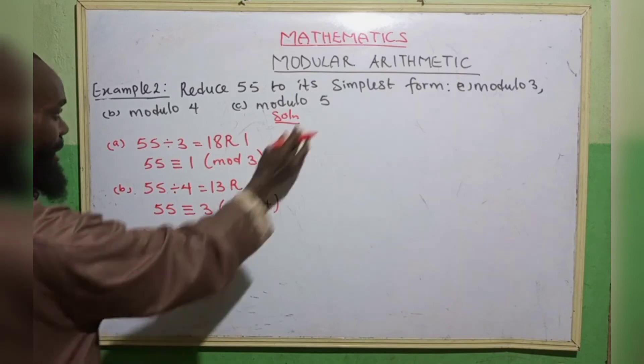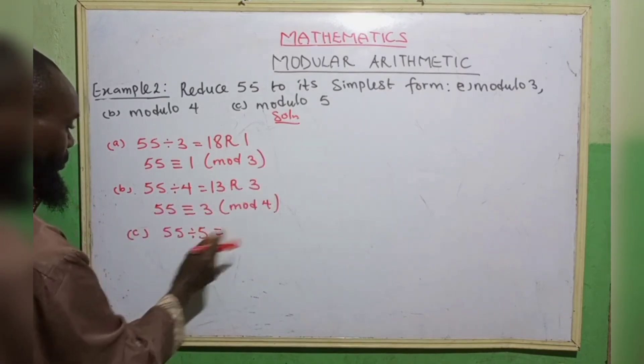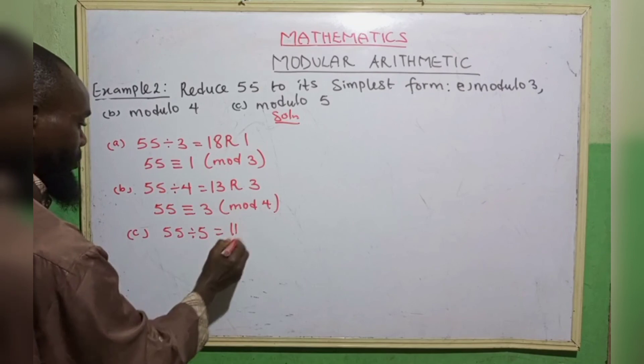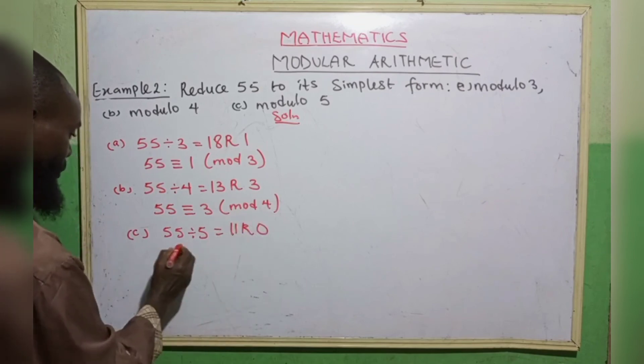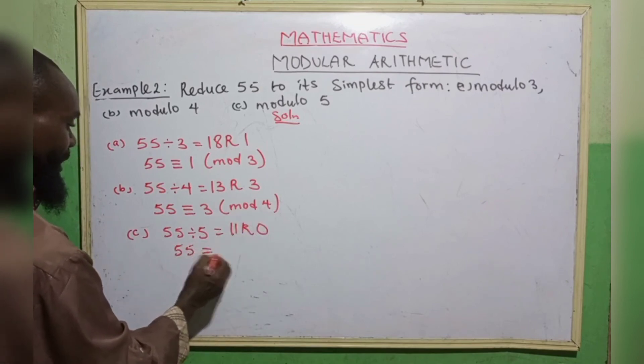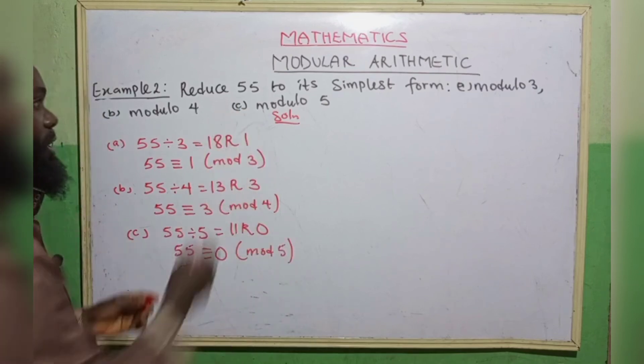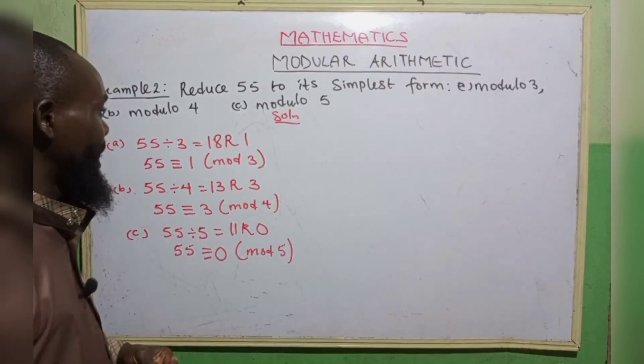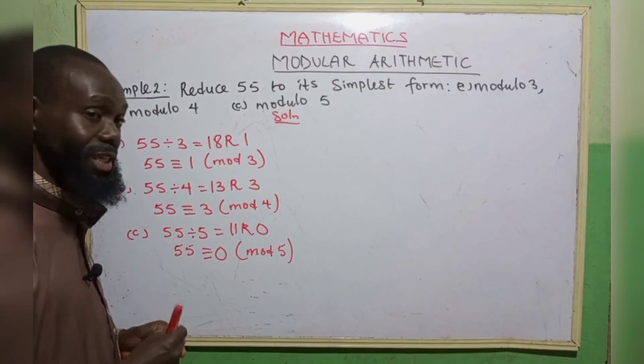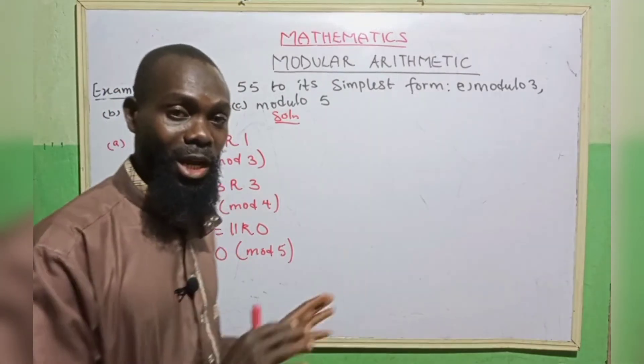And the third one, 55 divided by 5. 5 goes in 55. We have 11. Remainder 0. So 55 is equivalent to 0 in modulo 5. So this is how to understand the rudiments of modular arithmetic.